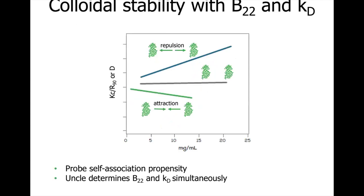Formulation screening also requires assessment of protein colloidal stability. Light scattering measurements in the UNCLE allow us to assess colloidal stability by probing the interactions between different molecules in solution. UNCLE can determine two measures of intermolecular interactions: B22, also known as the second virial coefficient, and Kd, the diffusion interaction parameter. In UNCLE the two parameters are determined simultaneously by looking at how the sample scatters light as we increase the protein concentration. If B22 and Kd are positive, we have repulsive interactions; if negative, the interactions are attractive and the protein shows self-association propensity.